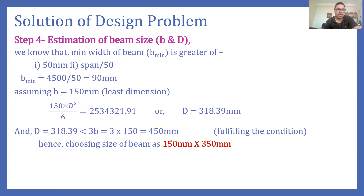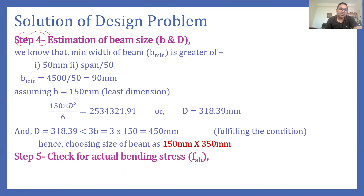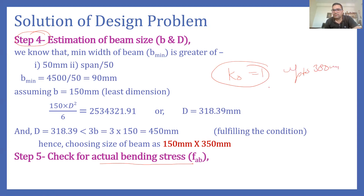Welcome back. We have completed step four and now move to the next step, where we find the actual bending stress. We initially assumed the value of k-naught as 1, which is valid for beam depth up to 300 mm. However, our final beam depth came out as 350 mm, which means the actual bending stress will differ from the permissible bending stress, so we will calculate f_ab.